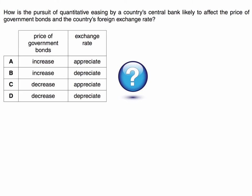The correct answer to this question on QE is B. The price of bonds is likely to increase whilst the exchange rate is likely to depreciate. So let's think about the reasoning behind this answer.